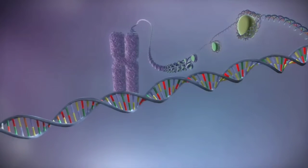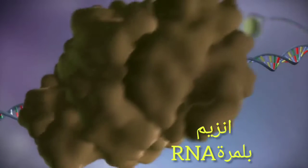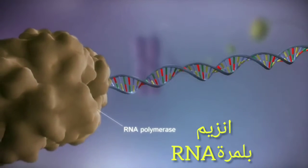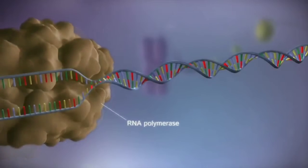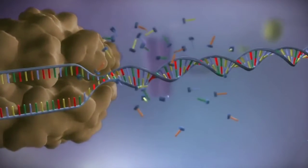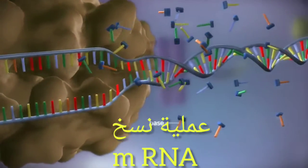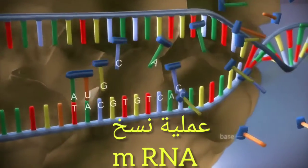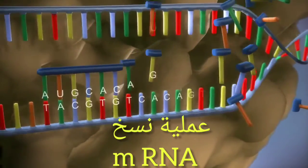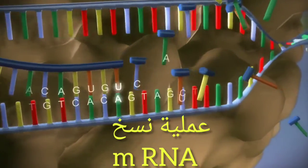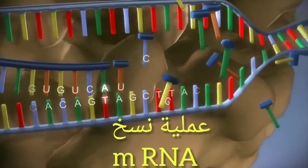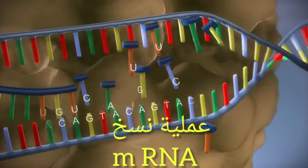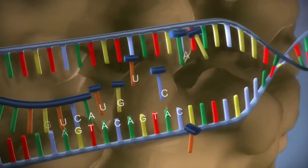When a gene is switched on, an enzyme called RNA polymerase attaches to the start of the gene. It moves along the DNA, making a strand of messenger RNA out of free bases in the nucleus. The DNA code determines the order in which the free bases are added to the messenger RNA. This process is called transcription.